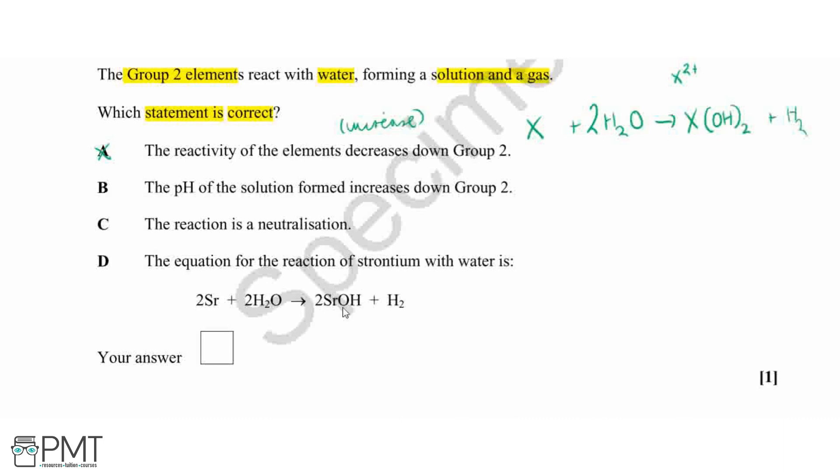Because strontium is a 2+ charge, therefore the formula would need to be Sr(OH)2, and this has affected the balancing as well. So this statement is incorrect.